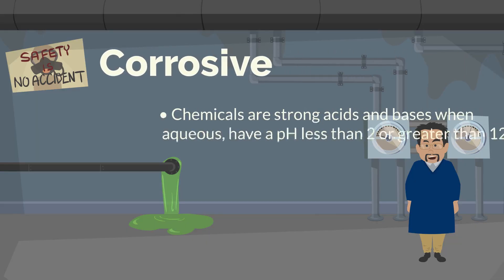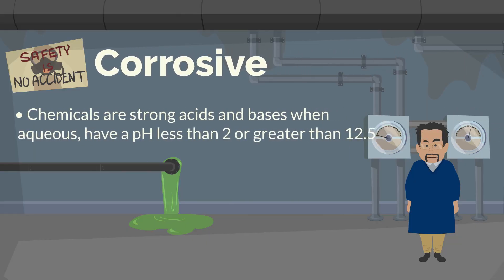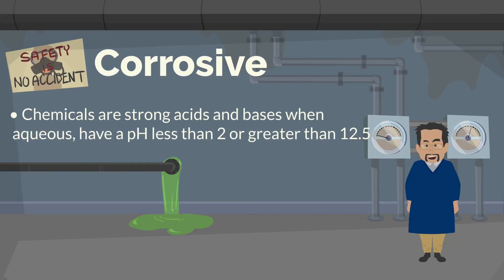Corrosive. Lastly, corrosive chemicals are strong acids and bases that, when aqueous, have a pH less than 2 or greater than 12.5.